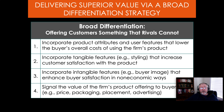You incorporate tangible features and styling that increase customer satisfaction. For a narrow differentiation strategy, it might be more about prestige. You also incorporate intangible features — buyer image — that enhance satisfaction in non-economic ways. Mercedes has a better perception than Kia or Ford. You signal the value of the firm's product offering through packaging and other means; Apple's distinctive packaging is a clear example. Signaling value is important when differentiation is based on intangible, subjective features that are hard for buyers to quantify.